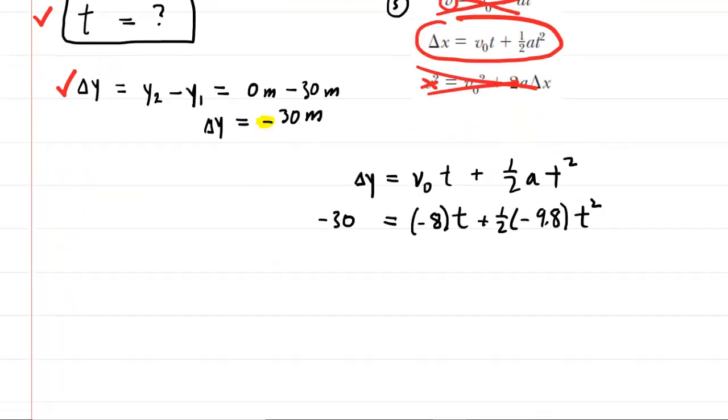Now what we'll do is simplify a little bit here. So we can multiply the one-half by the negative 9.8. That's going to give us negative 4.9 t squared. Right here we have negative 8 times t, and this is all equal to negative 30. Now we have ourselves, unfortunately, a quadratic formula.